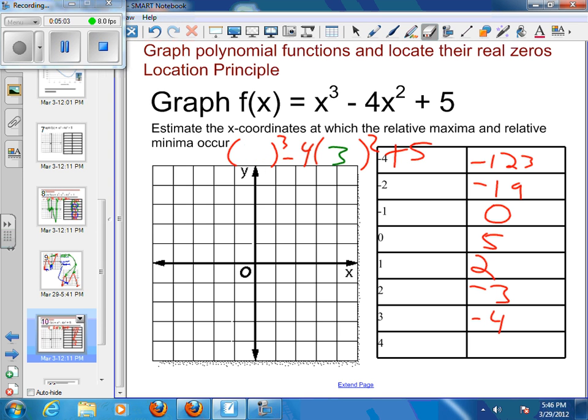And the last one I've got here is my positive four. So, that's positive four cubed minus four times four squared plus five. And I get a five. At that point, I'm ready to plot these points.